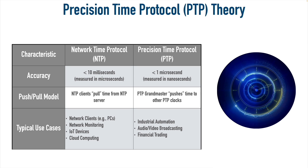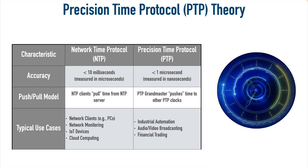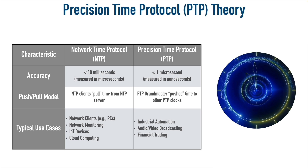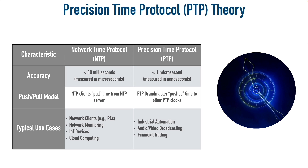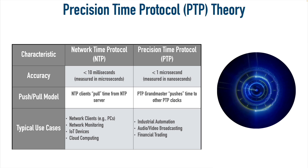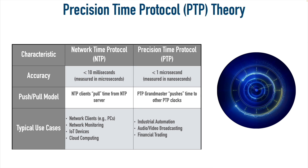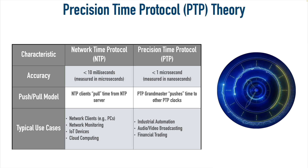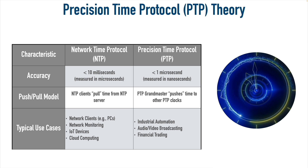PTP might be used in industrial automation, for example, where we have an automated factory and robots that have to be very precise. Or we might use PTP in audio-video broadcasting to synchronize all of our streams. Financial trading is another use case — high-frequency traders often make profit with very slight price variations in a stock by getting their order in before somebody else does, so they are very concerned about network delay and speed, and we need equipment that can record who got their order in first.